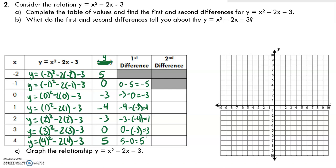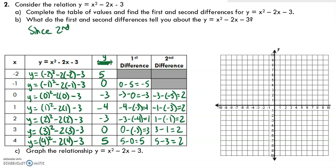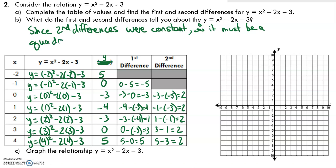The first differences are not the same, so let's go to the second differences. Negative 3 minus negative 5 is negative 3 plus 5, which is 2. Negative 1 minus negative 3 is negative 1 plus 3, also 2. Next, 1 minus negative 1 is 1 plus 1, which is 2. Then 3 minus 1 is 2. And 5 minus 3 is again 2. Since the second differences are constant but the first differences are not, therefore it must be a quadratic relationship. We knew this from the equation since the largest power of x was squared, but if you were only given the x and y values, this is how you discover if it's quadratic.